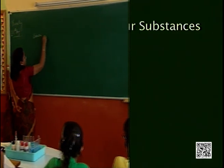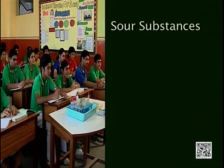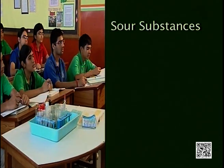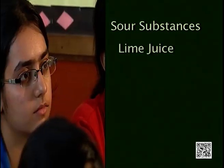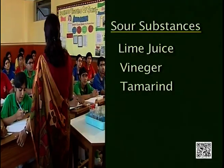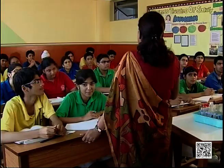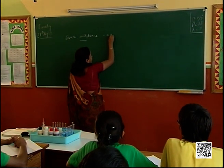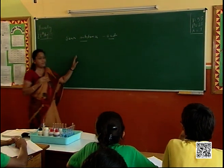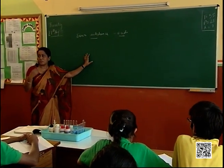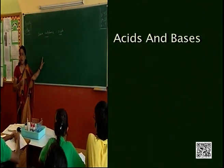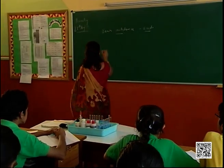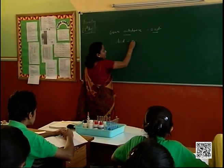Talking about sour substances, give me an example of a naturally occurring substance. Lime juice — that's sour in nature. You also have tomatoes, all the citrus fruits, and vinegar, tamarind — all these are sour substances because they contain acids. That's what we are going to study today: the properties of acids and bases. The word 'acid' has been derived from the Latin word 'acidus,' which means sour.